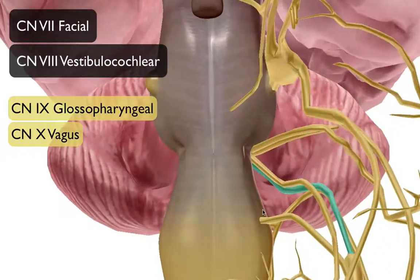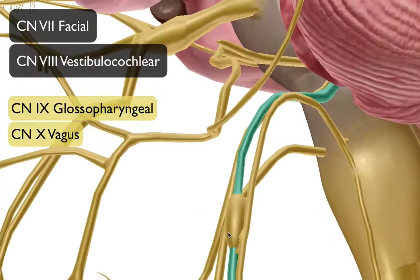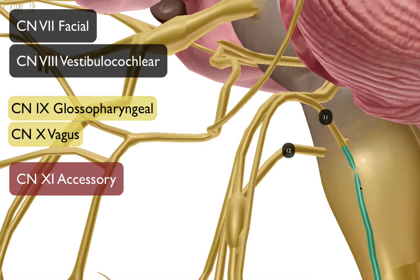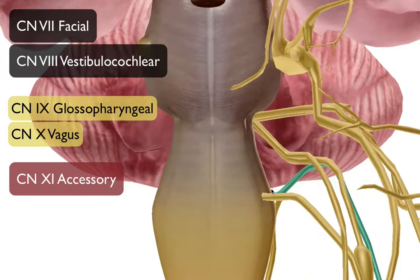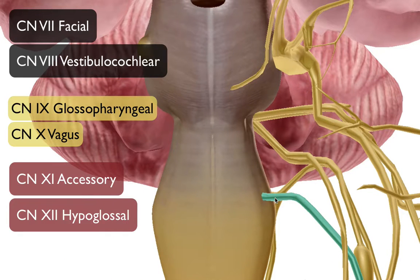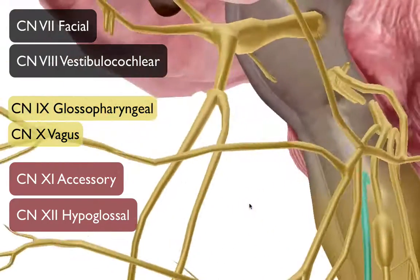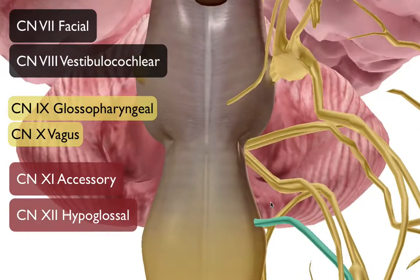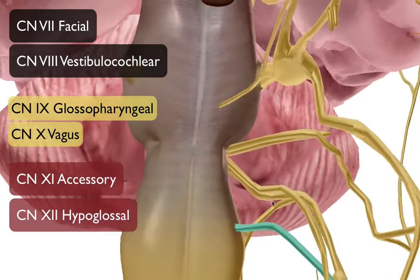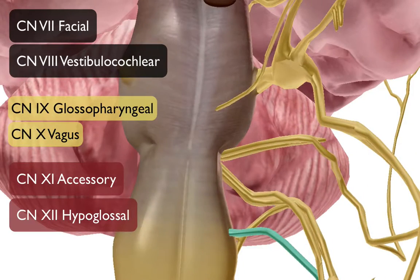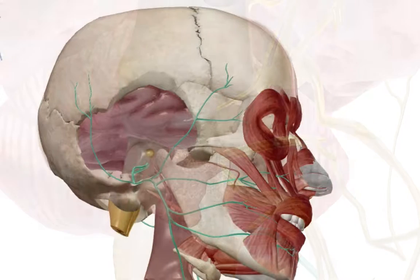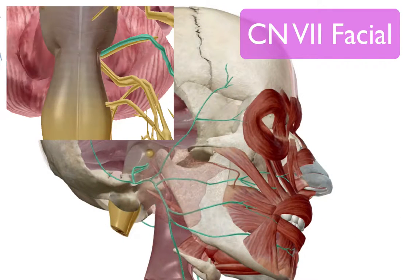Cranial nerves eleven and twelve are the most posterior. Here is the accessory nerve, including its spinal aspect, and just anterior to it is the final cranial nerve, the hypoglossal. We're going to take the next few moments to highlight each of these six nerves. Starting with cranial nerve number seven, the facial nerve.